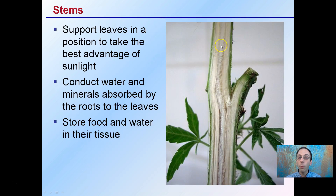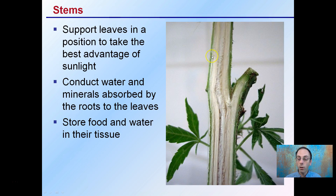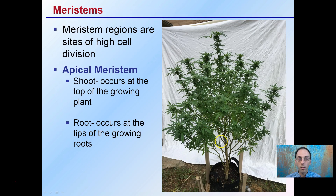The stems are support structures that support the leaves and allow the leaves to take best advantage of capturing light energy. They also conduct water and minerals absorbed by the roots to the leaves, and they can store food and water in their tissues. We see kind of a cutaway section here, and the exact stem structure may differ depending on what portion of the plant you're talking about or how old that tissue may be.